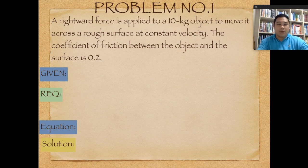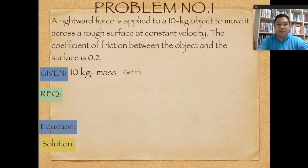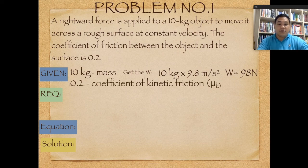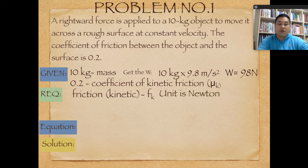Problem number one: A horizontal force is applied to a 10-kilogram object to move it across a rough surface at constant velocity. The coefficient of kinetic friction between the object and the surface is 0.2. Given: mass equals 10 kg, weight equals 10 × 9.8 = 98 newtons, and mu-k equals 0.2. The required value is the kinetic friction force in newtons.